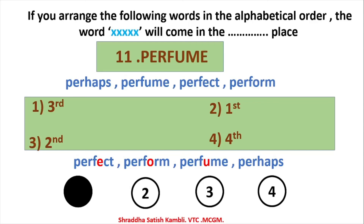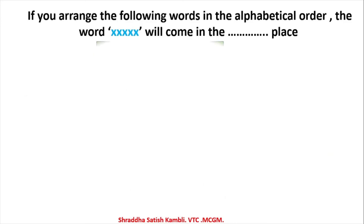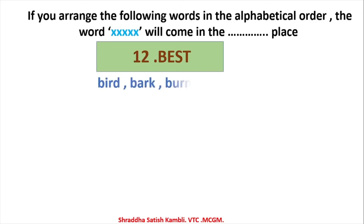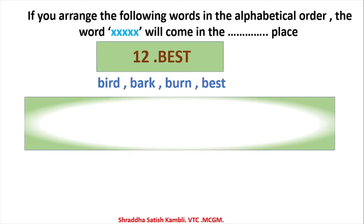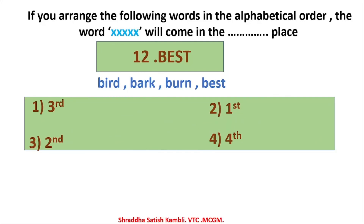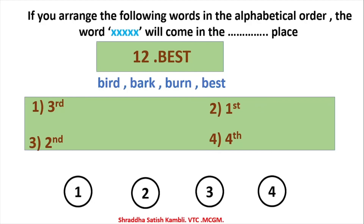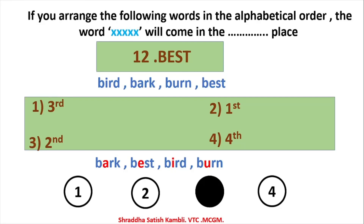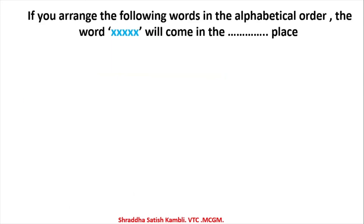Isn't it simple? Only the question has been worded in a different way. Moving on to the next example: the word is BEST. You have BARK, BEST, BIRD, BURN. All start with B, second letters are A, E, I, U — so BARK is first, BEST is second, BIRD is third, BURN is fourth. BEST comes in the second place — answer number three.